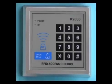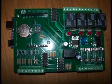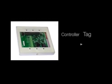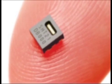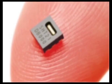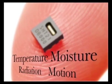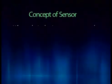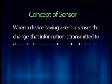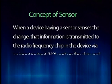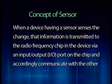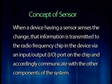A controller is a master board which monitors and physically alters the operating condition of all three basic components — that is, tag, reader, and antenna. A sensor is a device which senses a change in the environment of the system such as temperature, moisture, radiation, and motion. When a device having a sensor senses the change, that information is transmitted to the radio frequency chip in the device via an input/output port on the chip, and accordingly communicates with the other components of the system.